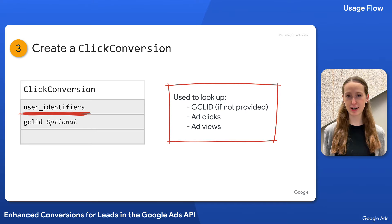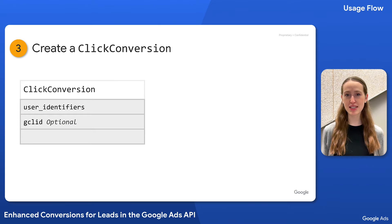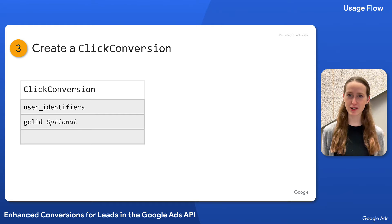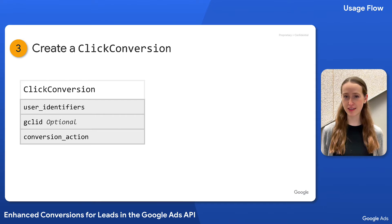Google Ads uses the hashed identifiers you provide to look up the GCLID associated with the conversion, and further uses them to look up ad clicks and views from Google's signed-in users to improve conversion attribution. Ultimately, this means improved performance from more accurate campaign reporting and an overall increase in conversions. You'll also need to set conversion action to the resource name of an enabled upload clicks conversion action — the same one that you set up when you went through the prerequisites. If you're not sure how to create or find the conversion action, check out our intro video to learn more.